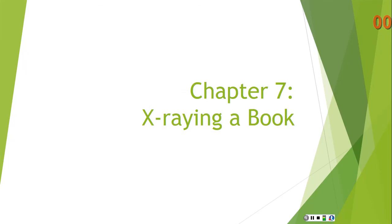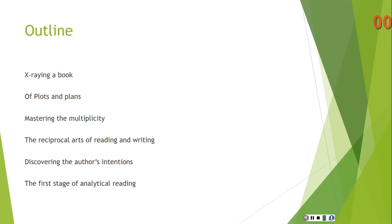Now we're in Chapter 7 of How to Read a Book, and this is called X-raying a Book. Here's the outline, following the chapter: X-raying a book of plots and plans, mastering the multiplicity, the reciprocal arts of reading and writing, discovering the author's intention, and the first stage of analytical reading. In Chapter 6, we started on the level of reading called analytical reading. Through chapters 6 and 7, Adler lays out the first stage of analytical reading — and there are three stages.